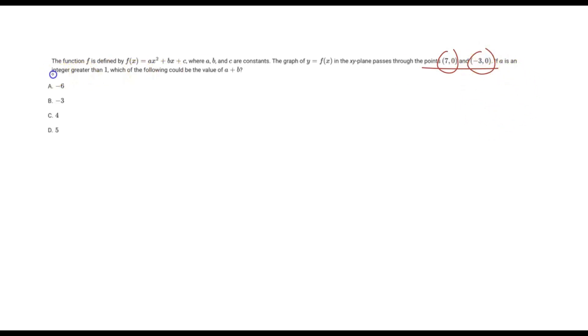It says if a is an integer greater than 1, which of the following could be? So could means that there are multiple possible values, but just based on our selections here with our choices, which one could be a value of a plus b?